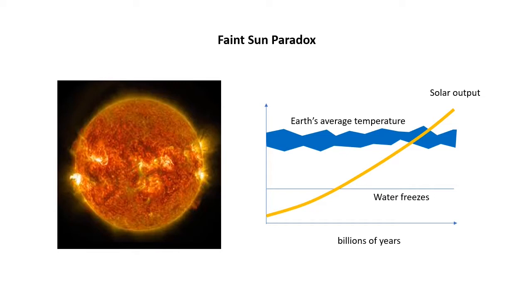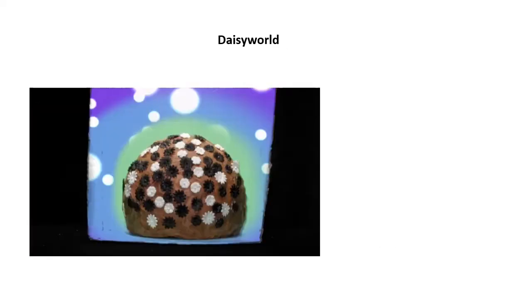So Lovelock and another guy, Andrew Watson, made a model to check out whether it was at least possible that simple ecological changes could regulate a planet's surface temperature. So they imagined a world with black and white daisies. When the temperature dropped, this would favour black daisies, which absorb more light from the Sun, warming them up and helping to increase the temperature.